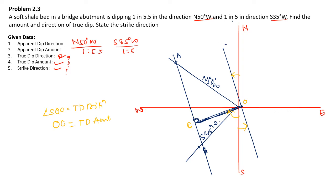So, I will name the strike line points as S' and S. Angle SOS' and angle NOS' will give you the strike direction. Measuring these angles gives the strike direction, and we complete this part for problem 2 and 3.